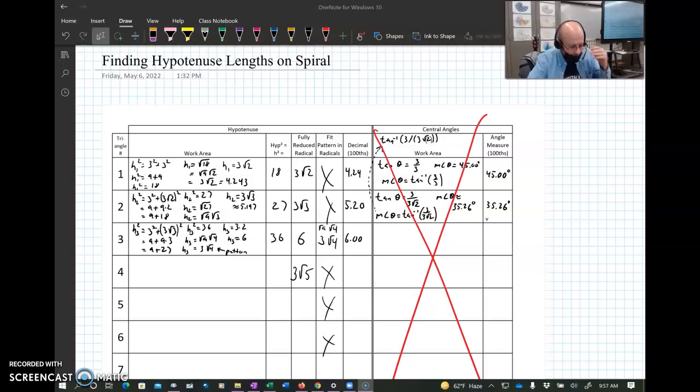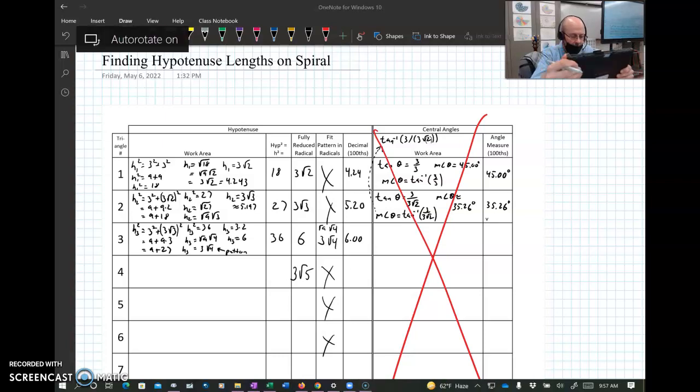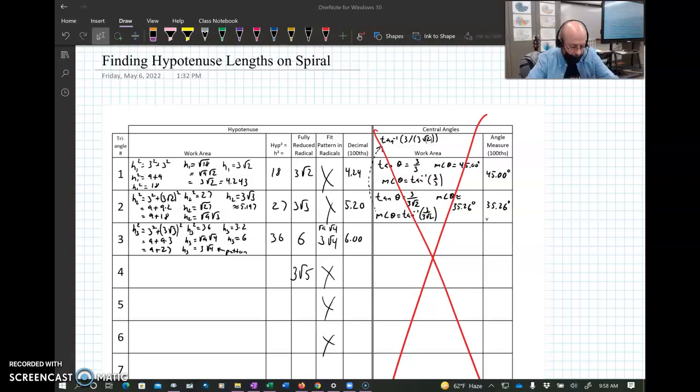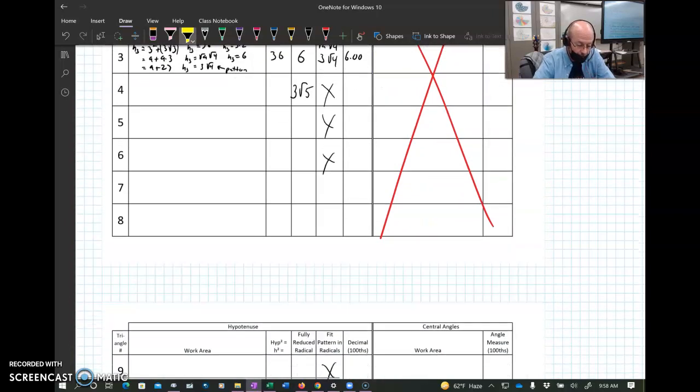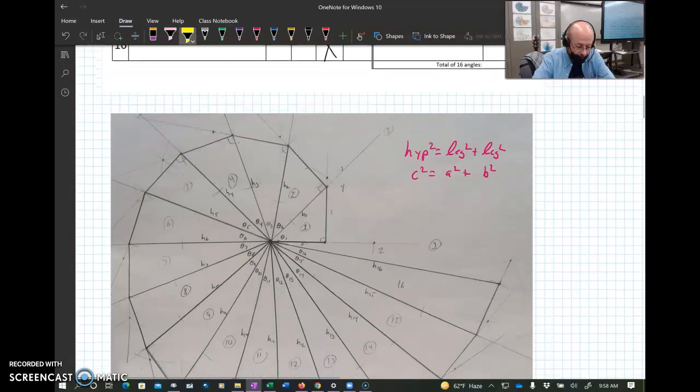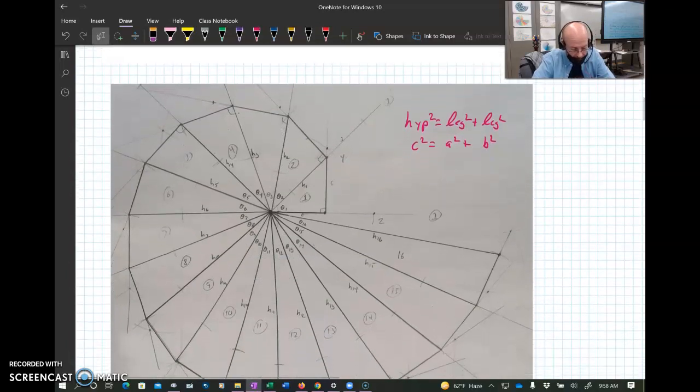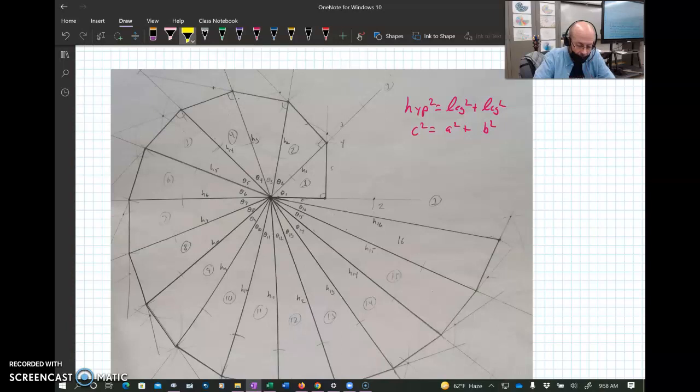Aloha friends, welcome to finding hypotenuse lengths on our spiral. So this is what our worksheet looks like right here. We're going to be doing the hypotenuses today. We are not going to be doing the central angles, we'll do that in another video. You do need the hypotenuse lengths to do the central angles, so this one does need to get done first. You do have two sides to this, and I recommend that you have this diagram too. We're going to be using the Pythagorean theorem, the hypotenuse squared equals the leg squared plus the leg squared, or c² = a² + b².